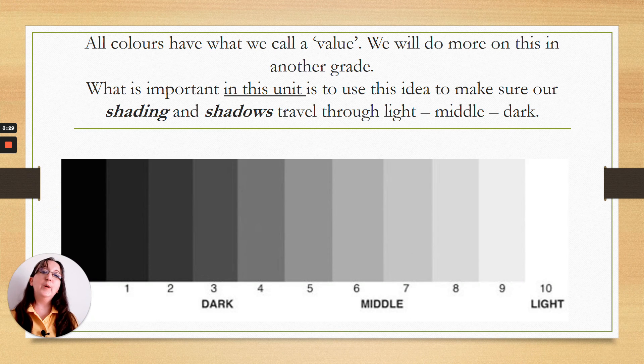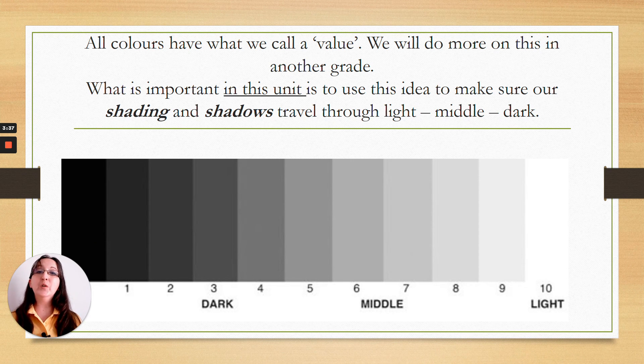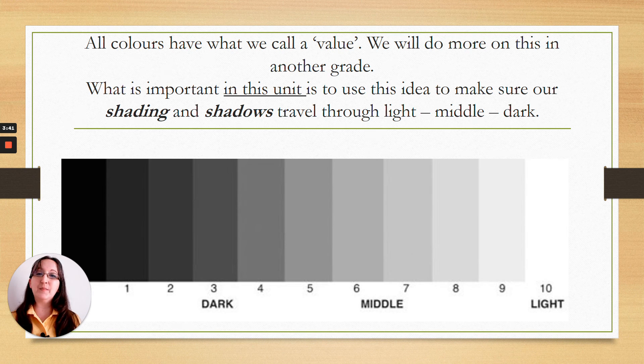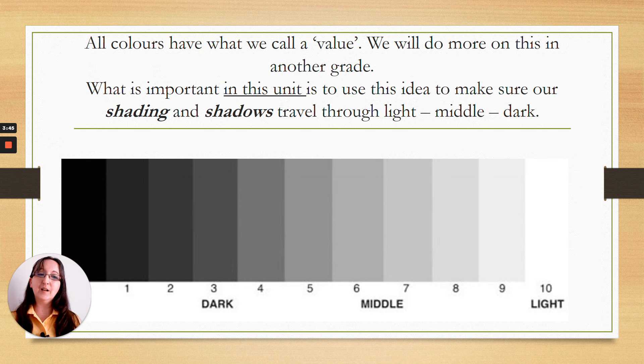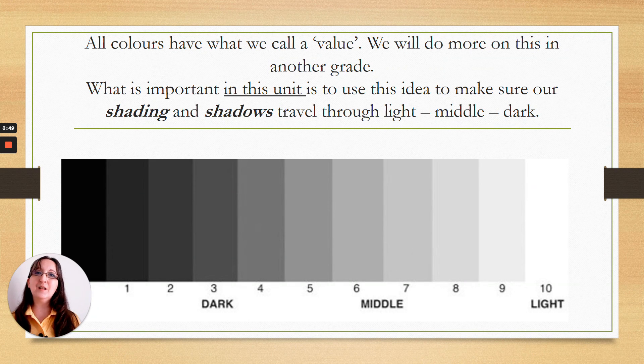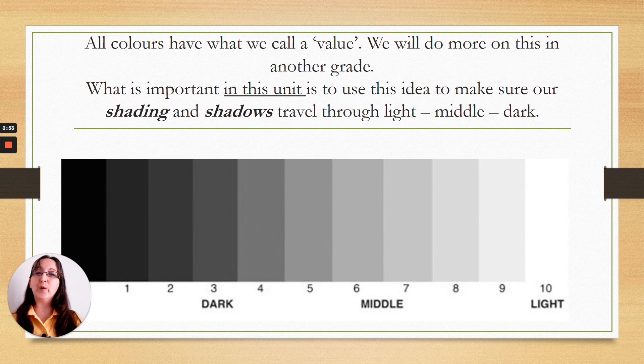So colours have what we call a value. We will do more on this in another grade, Grade 4. What is important in this unit is to use the idea to make our shading and shadow travel through the light, the middle and the dark values to make things more realistic and create better form.